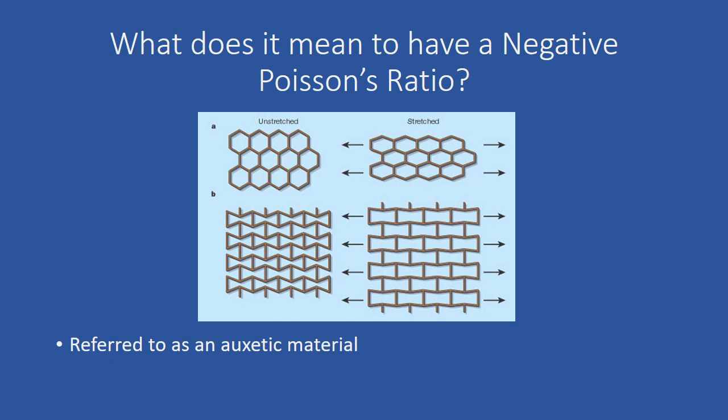When a material possesses a negative Poisson's ratio, it is commonly referred to as an auxetic material.